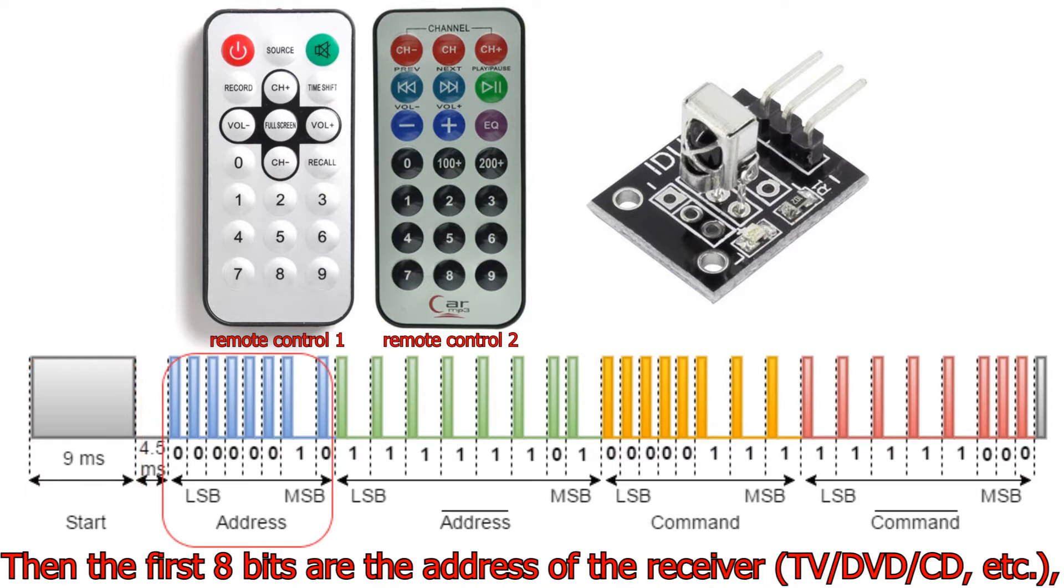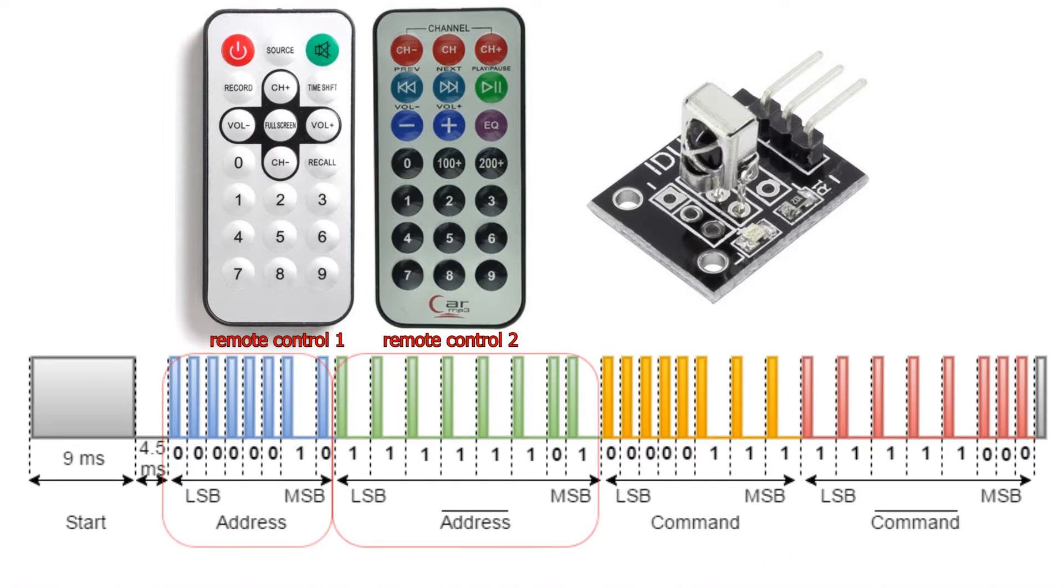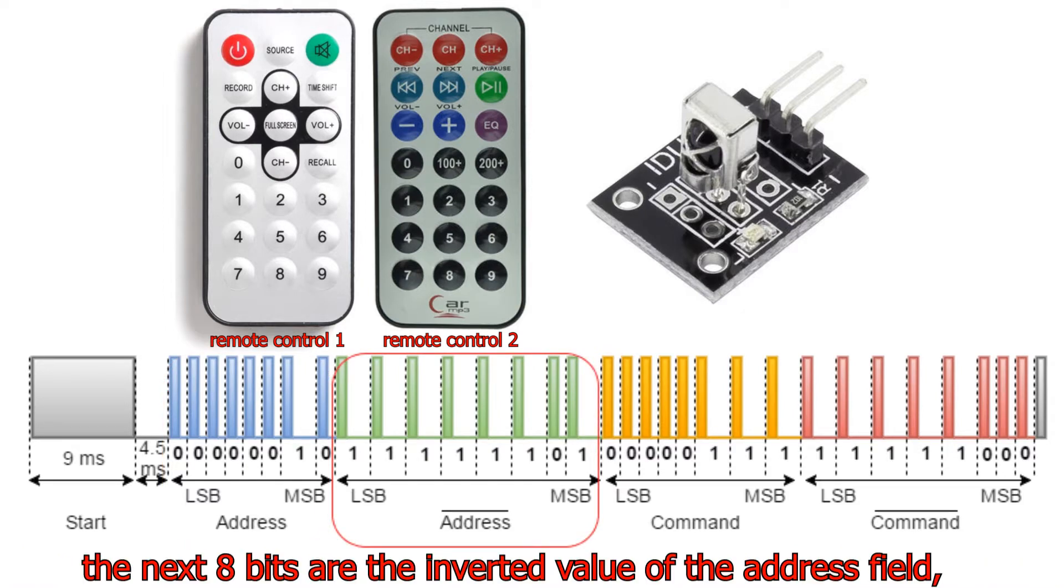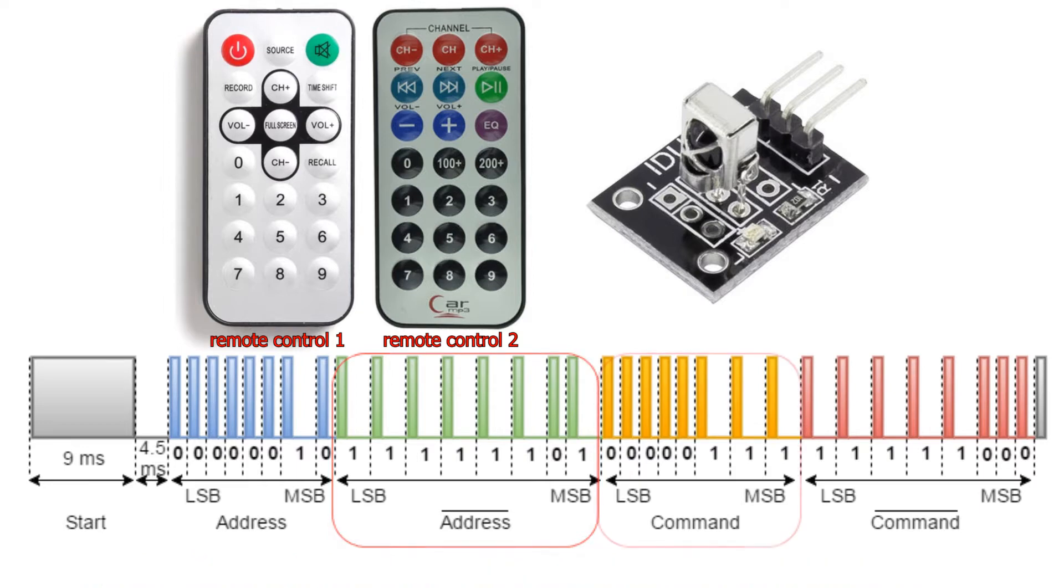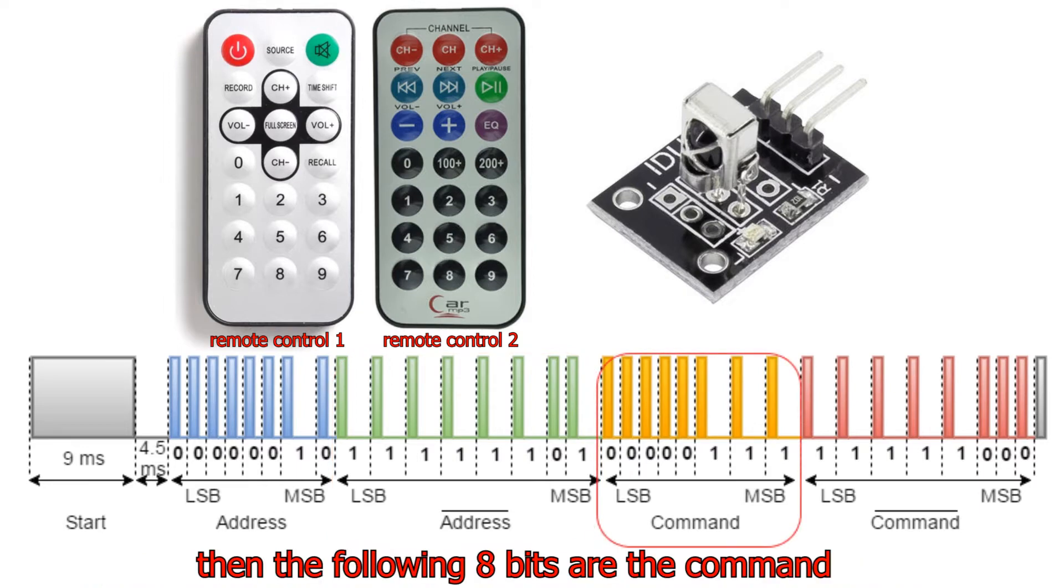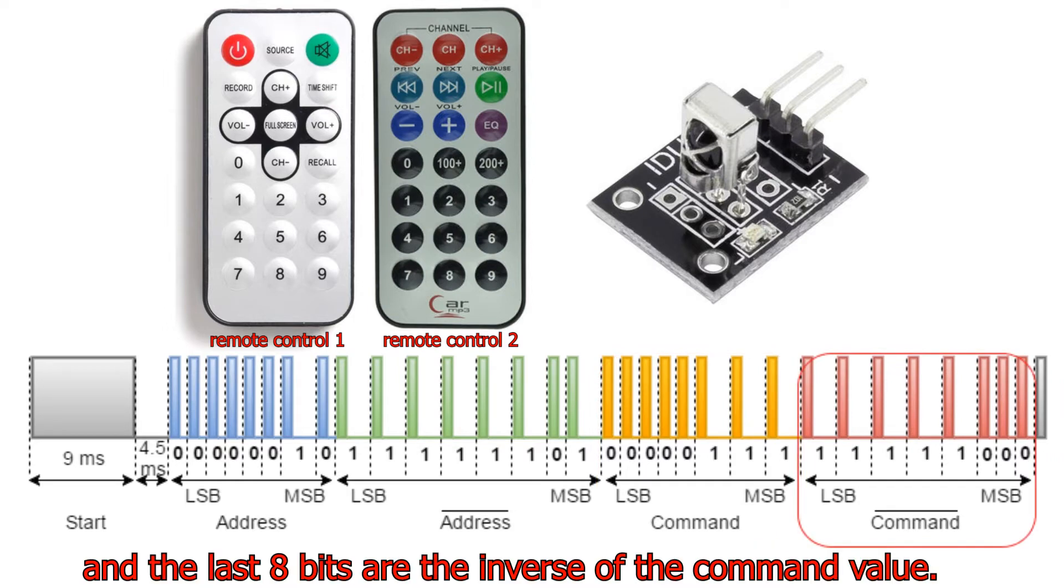Then, the first 8 bits are the address of the receiver – TV, DVD, CD, etc. The next 8 bits are the inverted value of the address field. Then, the following 8 bits are the command, and the last 8 bits are the inverse of the command value.